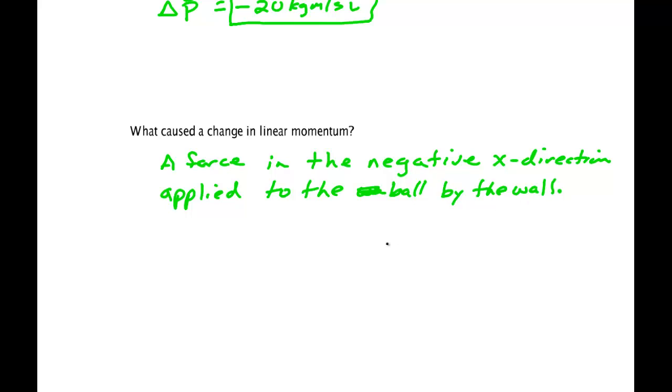Of course, by the third law, we know that if the wall applied a force in the negative x direction to the ball, then the ball had to apply a force to the wall in the positive x direction. But what we're interested here is the change in linear momentum of the ball, and that was due to the force that the wall applied. Notice that the force applied in the negative x direction is in the same direction as the direction of the change in linear momentum. These are connected. This is what it's causing, linear momentum change.